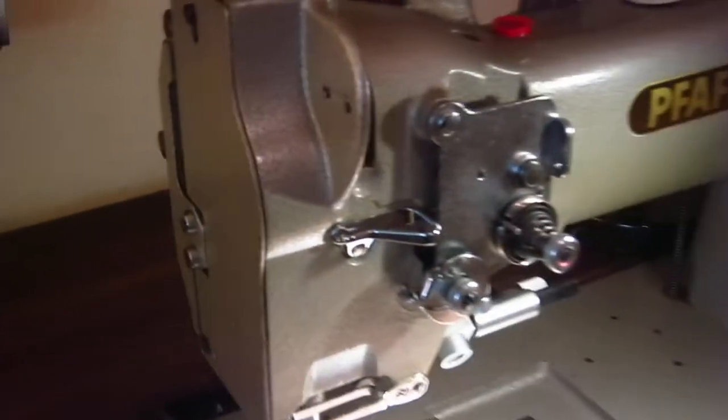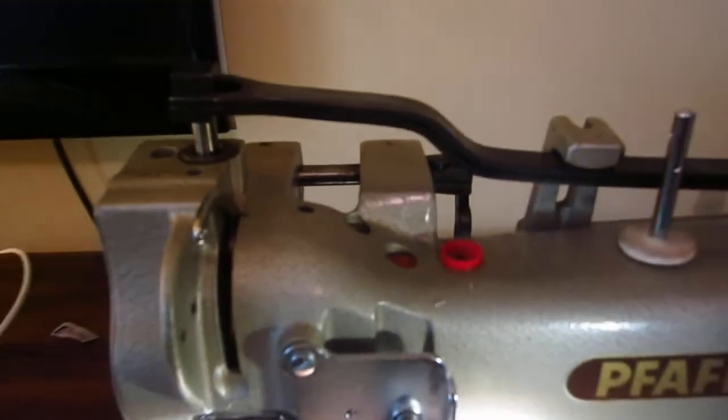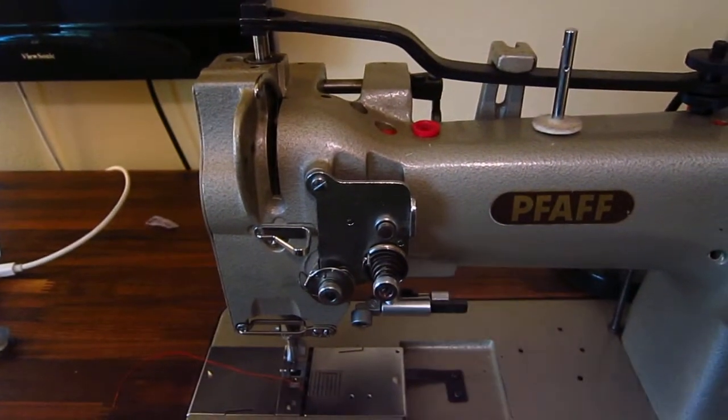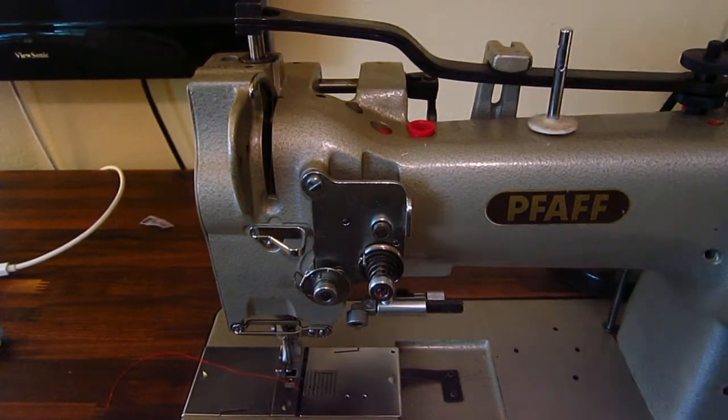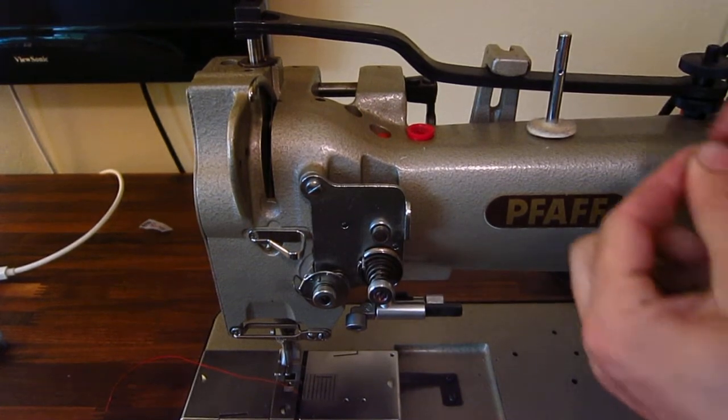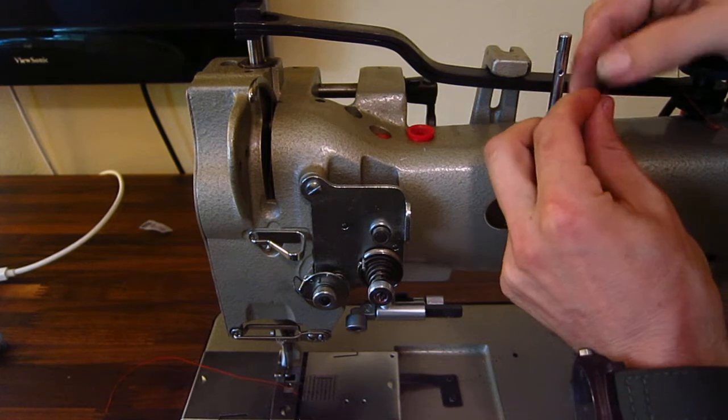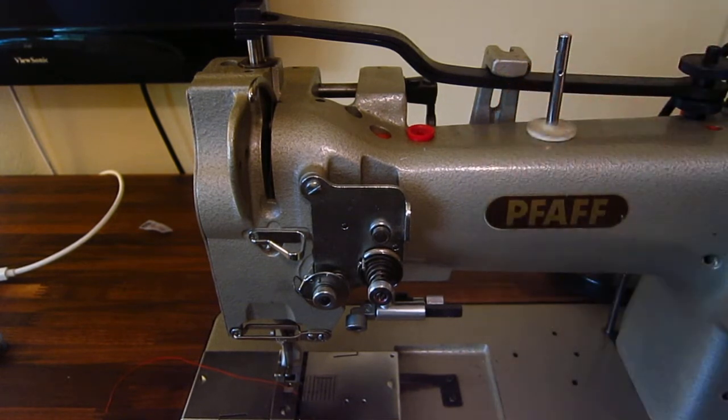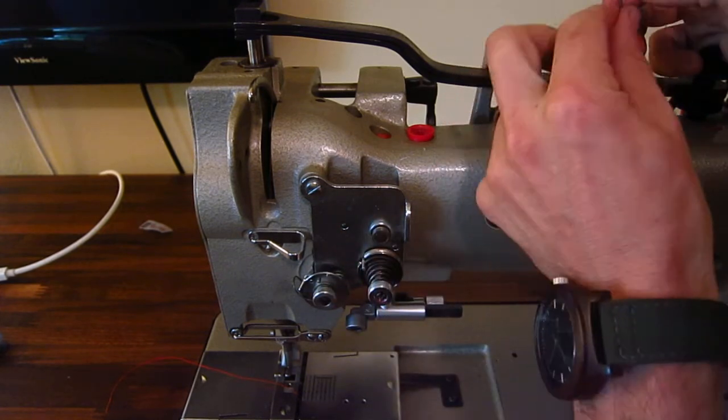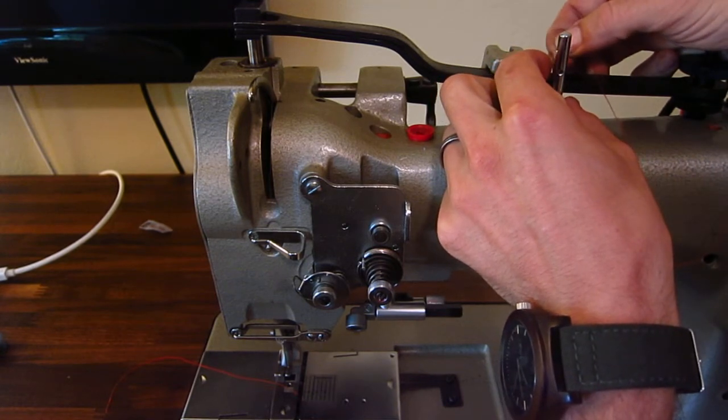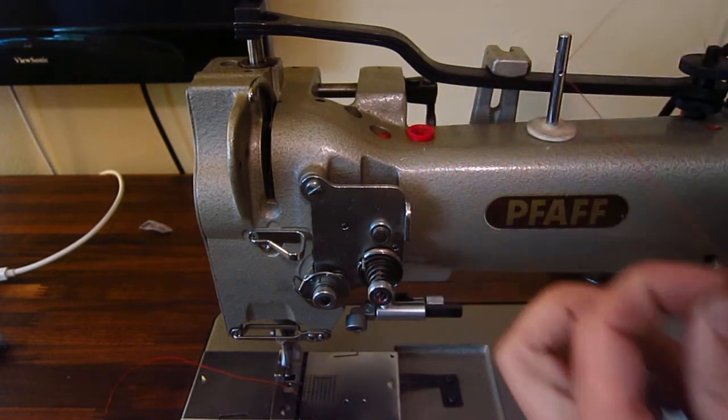And then to thread it, it's exactly the same procedure on yours. You're going to grab it from the spool stand. Route it just through one of these guides is fine. You don't need to do two. Just the one that gives you the straightest path to the tension assembly here. So it's kind of hard to see it. So back to front.